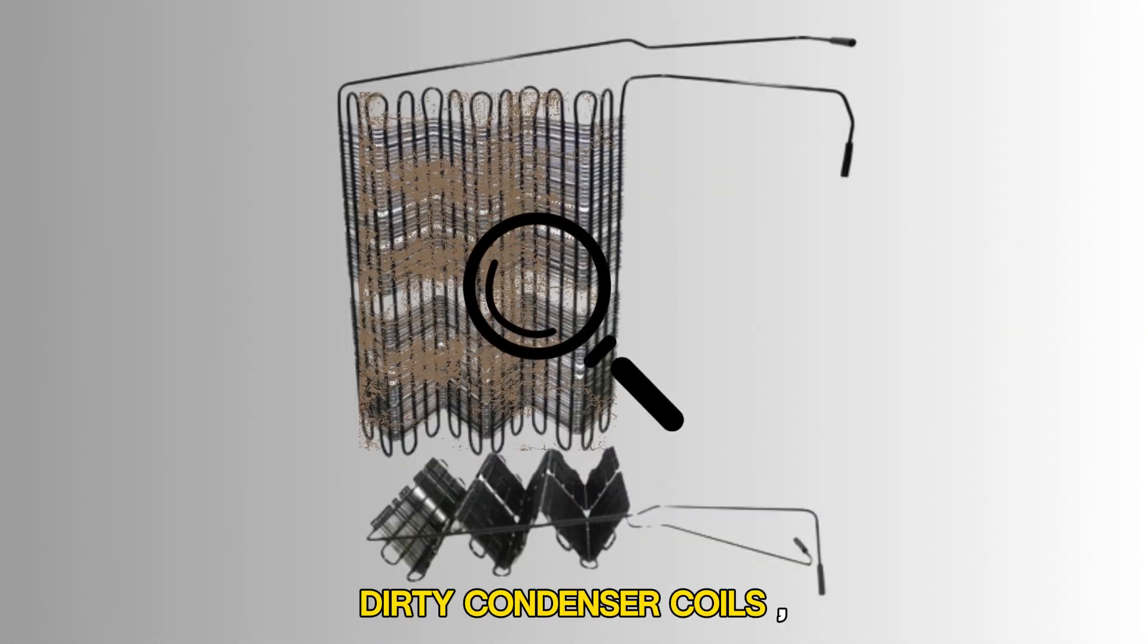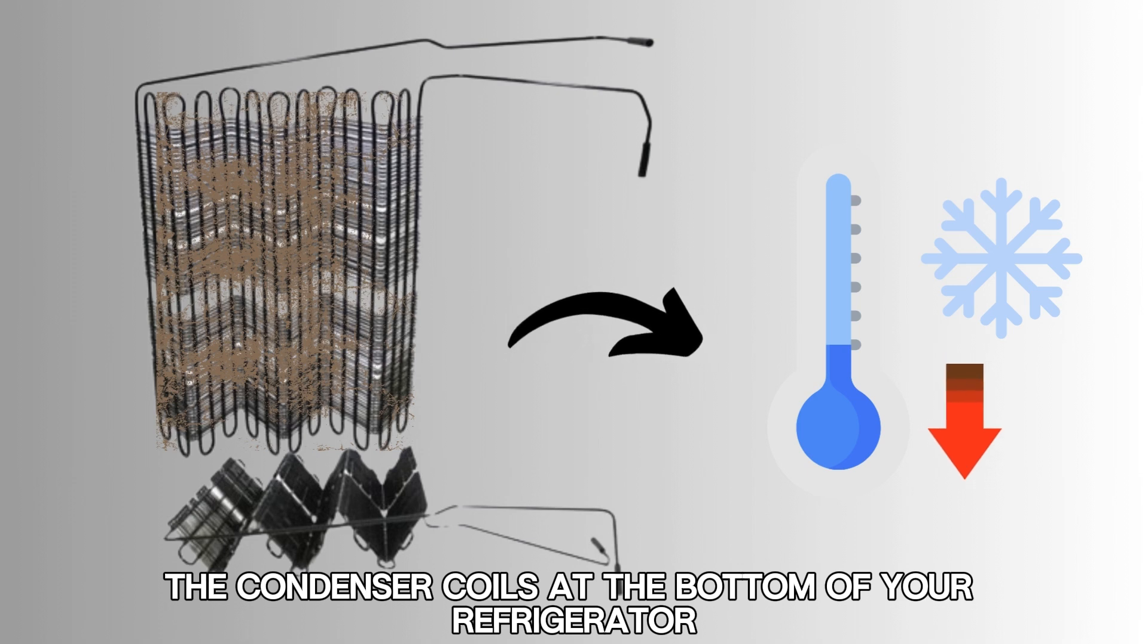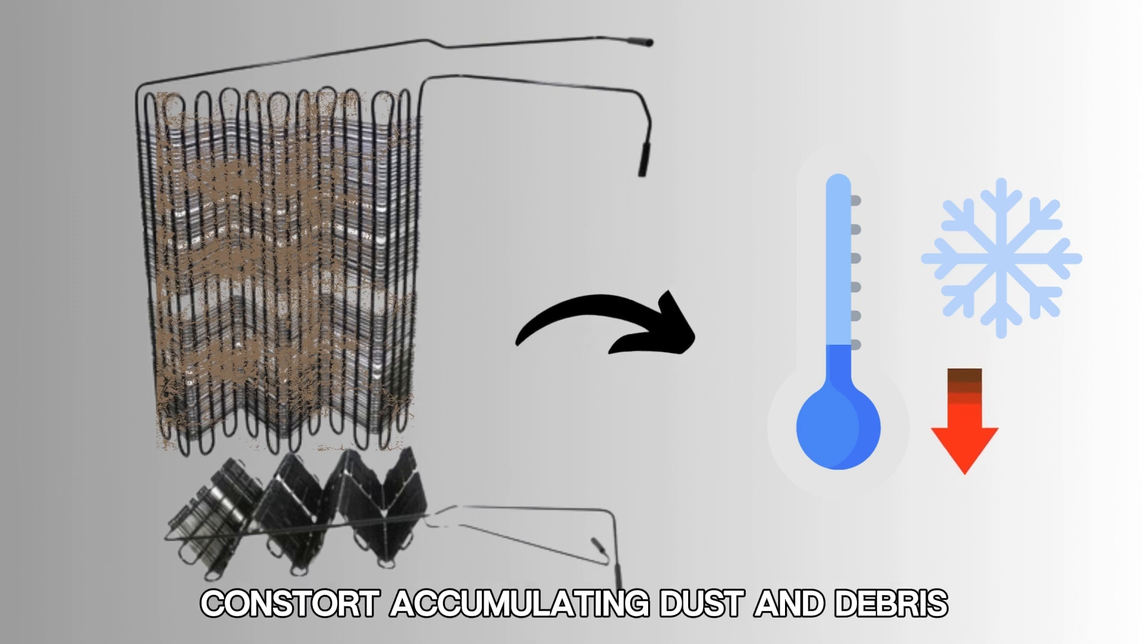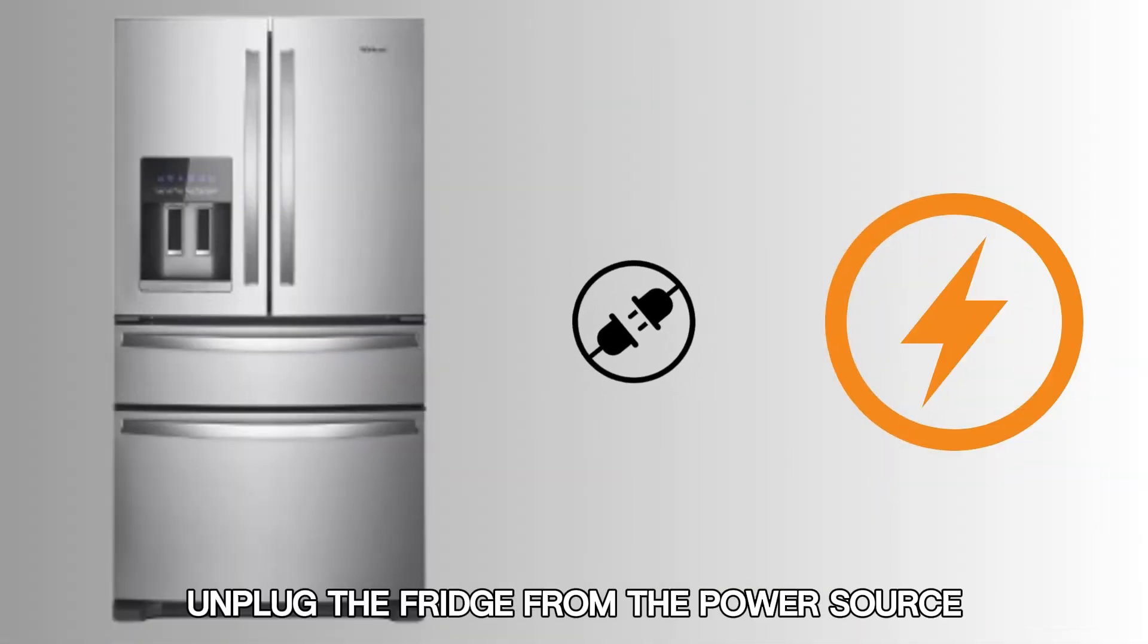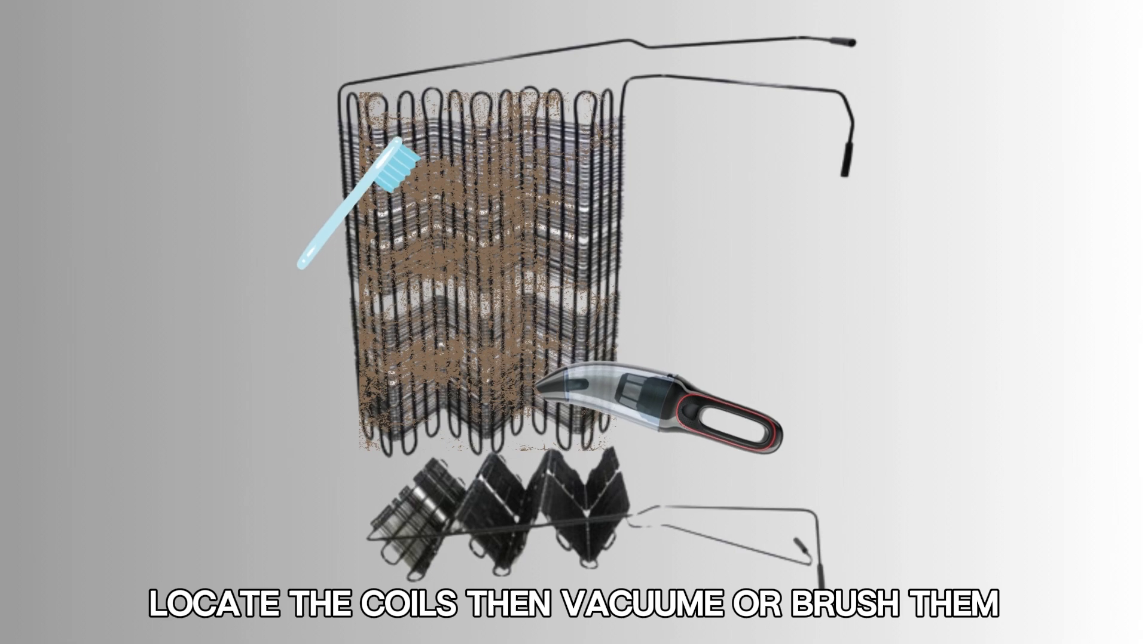Dirty condenser coils. The condenser coils at the bottom of your refrigerator can start accumulating dust and debris, affecting its cooling efficiency. To clean the coils, unplug the fridge from the power source, locate the coils, then vacuum or brush them.